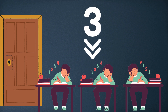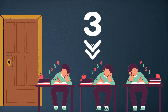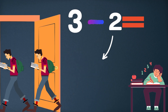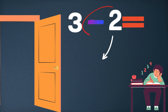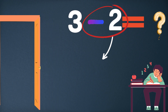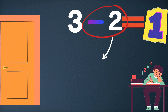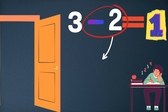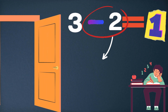Dear kids, let's solve an example of one-digit subtraction. Three boys are studying in the class. Two boys left the classroom, shown by a red circle highlighting the number 2 with a subtraction sign. Only one boy is studying in the classroom, so the answer is 1.